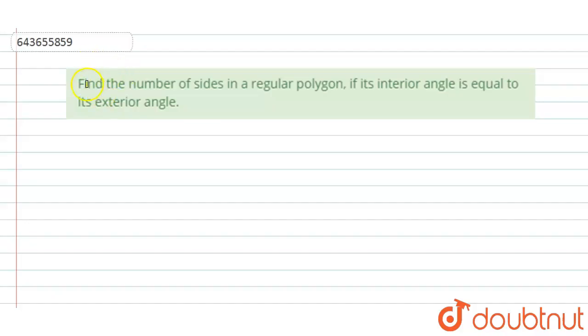Hi, welcome to this video. The question is: find the number of sides in a regular polygon if its interior angle is equal to its exterior angle.